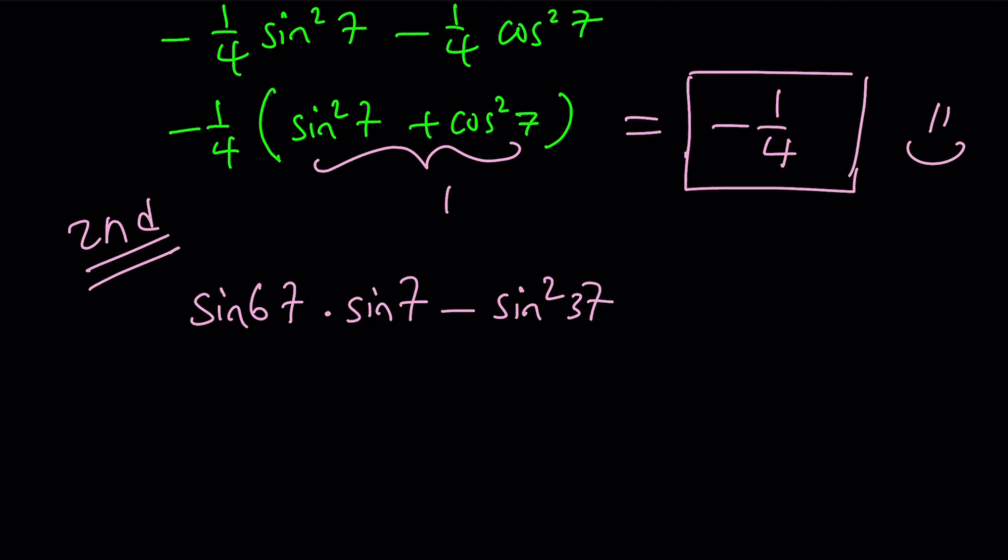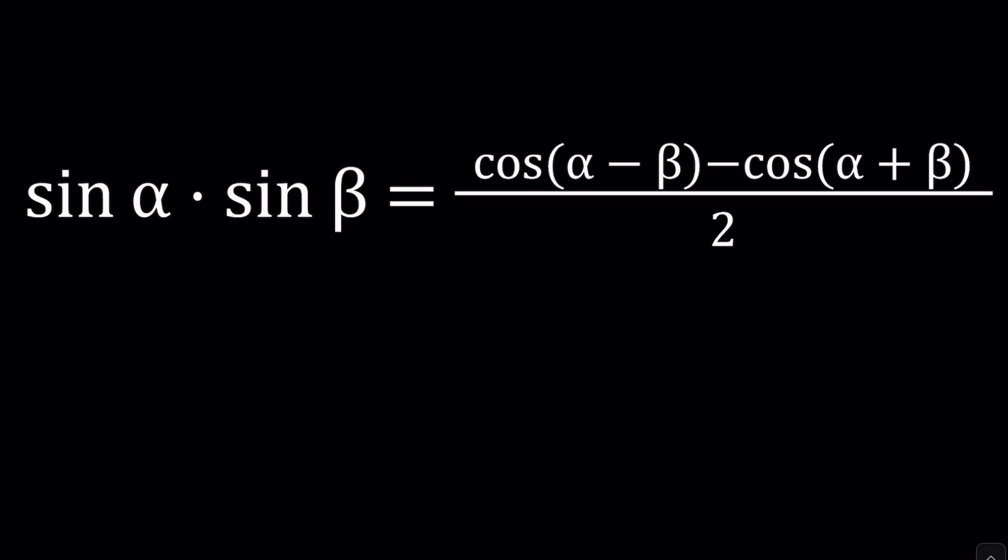So now we're going to use what's called a product to sum formula. That's one of the worst identities in trigonometry. And trigonometry has a lot of identities. But this is the worst one ever. And I already have it for you.